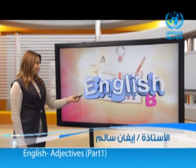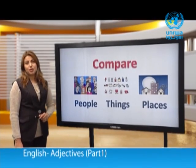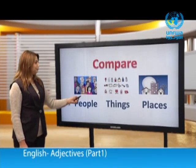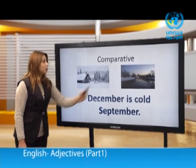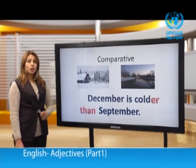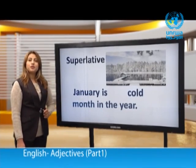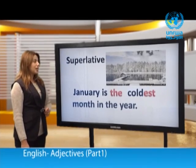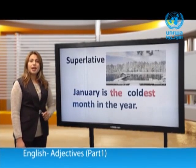Welcome back. People, things, and places are different and sometimes similar. We use adjectives to compare between people, things, or places. This is a picture of December and this is a picture of September. December is colder than September — we call this comparative. January is the coldest month in the year — we call this superlative. 'Coldest' and 'colder' are short adjectives.